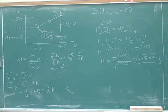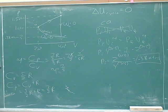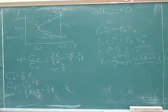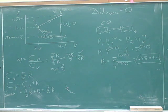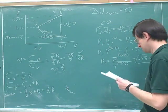Now let's find the work done by the gas and the heat absorbed. You need to find the area under the curve from A to B.